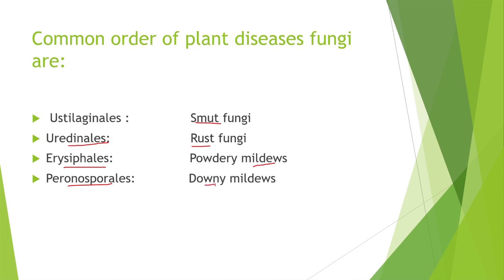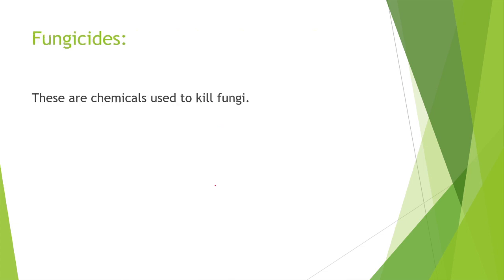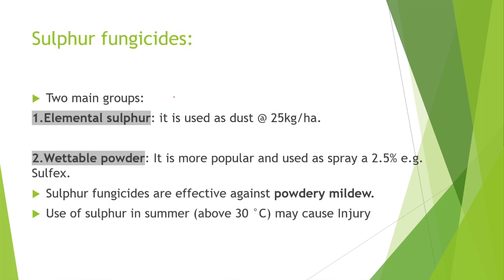Now the next topic is fungicides — chemicals used to kill fungi. First are sulfur fungicides, which have two main groups: elemental sulfur and wettable powder. Elemental sulfur is used for dusting at the rate of 25 kg per hectare. Wettable powder is more popular, applied at 2.5%, for example sulfex. Sulfur fungicides are effective against powdery mildew. Use of sulfur in summer may cause injury to plants.